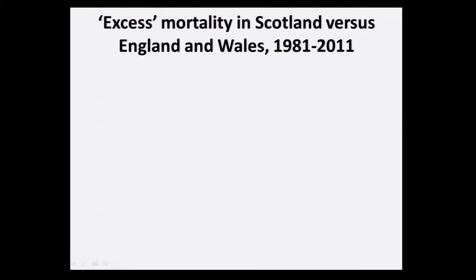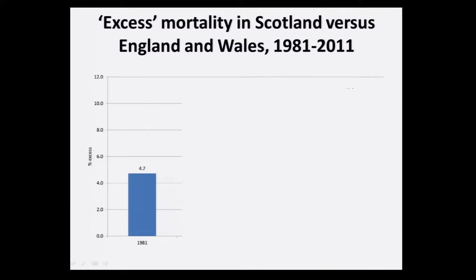We've become quite interested in recent years in the differentials in mortality between countries. David Porteus described differentials in mortality between two cities, Glasgow and Edinburgh. We see this on a larger basis between countries across Europe, comparing Great Britain with Eastern and Central Europe. But we also see it within the UK, and from the 80s we've seen an increase in mortality in Scottish populations relative to English populations. We euphemistically call this excess mortality.